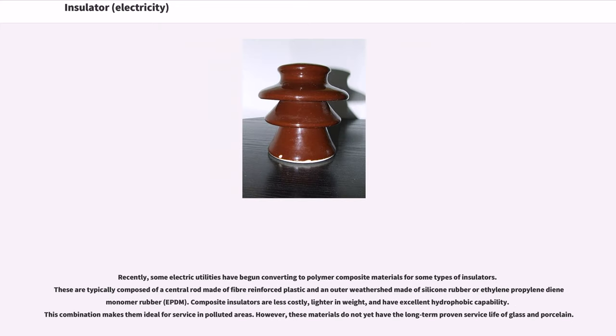Recently, some electric utilities have begun converting to polymer composite materials for some types of insulators. These are typically composed of a central rod made of fiber-reinforced plastic and an outer weathershed made of silicone rubber or ethylene propylene diene monomer rubber. Composite insulators are less costly, lighter in weight, and have excellent hydrophobic capability. This combination makes them ideal for service in polluted areas. However, these materials do not yet have the long-term proven service life of glass and porcelain.